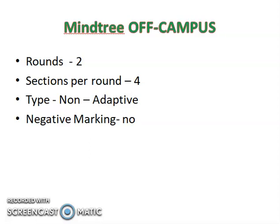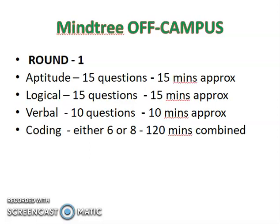So basically talking about the rounds — there will be two rounds and you will have four sections in each round. In round one there will be four sections, and in round two there will be four sections. This is going to be a non-adaptive test and there will be no negative marking.